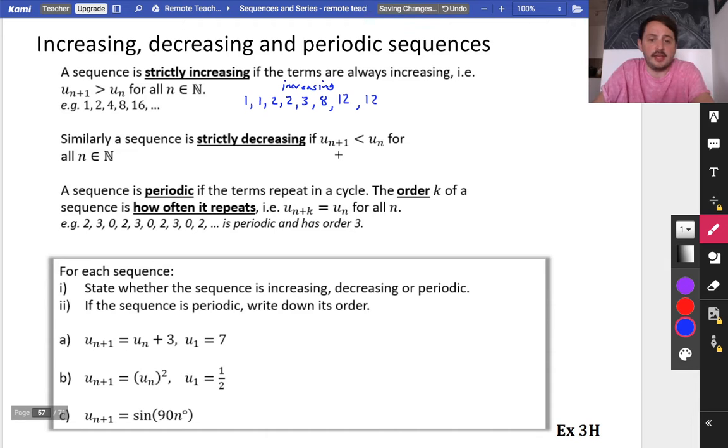It is decreasing if the next term is smaller than the previous term. For example, a sequence that maybe goes like this, pretty obvious, this is a decreasing sequence.